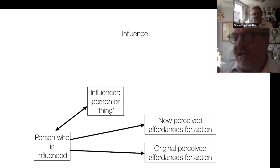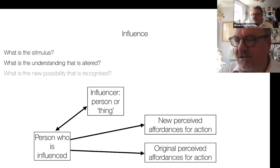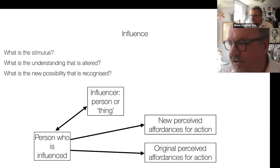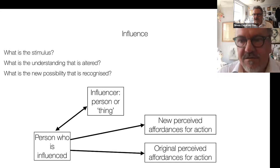If we think about an influencer as a person or a thing, something that caused an experience for us and this might happen in real time or it might be a remembered experience. This process of influence results in us perceiving new affordances for thought and action. Using this model, we can characterize influence by asking three questions: What is the stimulus, the experience that changed us? What is the understanding that is altered? And what is the new possibility that's recognized?